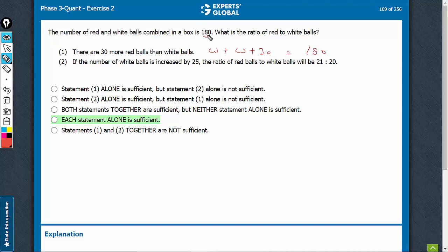And intuitively, it's easy to find 75 and 105 if the difference is 30. The point is, you can find the value of W as well as R, and therefore you can find the ratio. Statement 1 is sufficient.